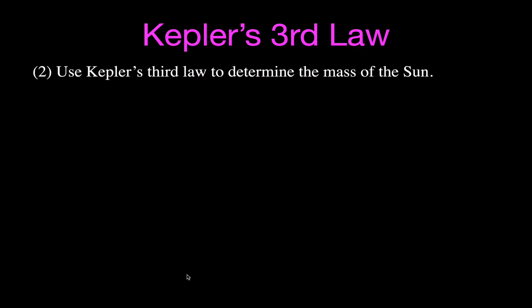In example two, we use Kepler's Third Law to determine the mass of the Sun. The form we use says the semi-major axis cubed divided by the period squared equals G times the mass of the Sun divided by 4π². We can use the semi-major axis A and orbital period T for any planet orbiting the Sun and get the same answer for the Sun's mass. For this example, we'll use Earth's values.